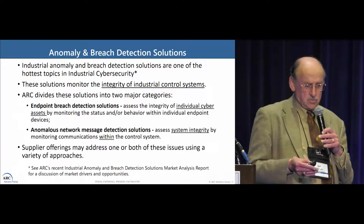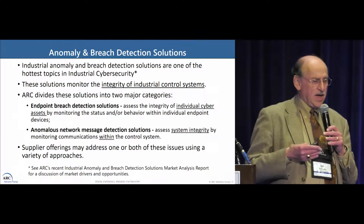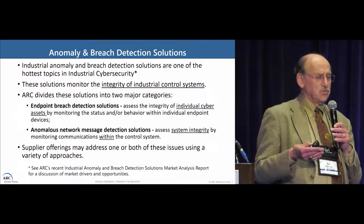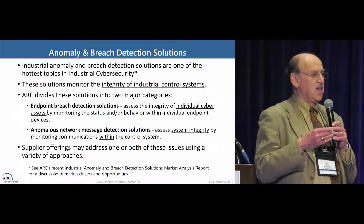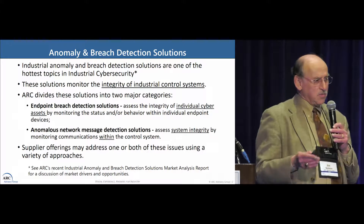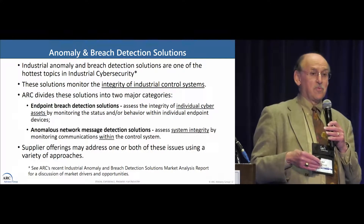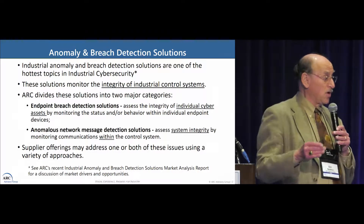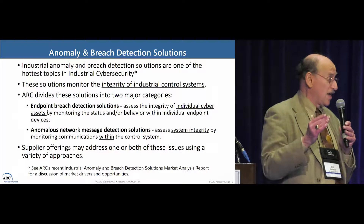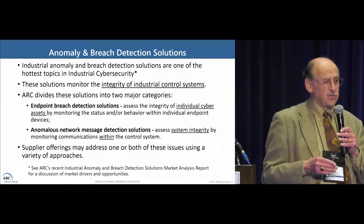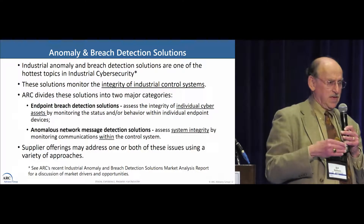I also want to distinguish these from network intrusion detection solutions. Network intrusion detection is generally looking to trap things from getting into the system. Anomaly detection is more focused on things that are probably already in the system — you're looking at the network messages flowing within the system. You could also detect something coming in from outside, but that's not the main focus, whereas a lot of intrusion detection is only looking at what's coming in.